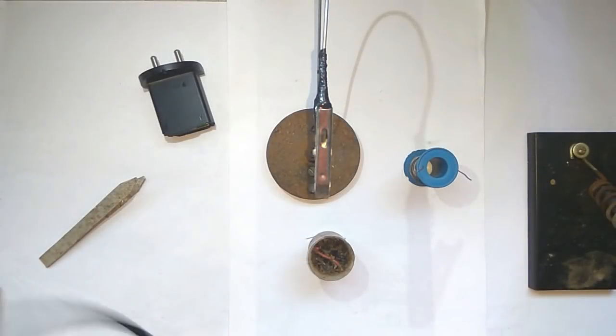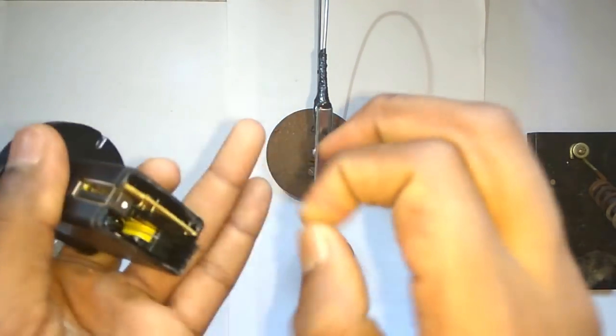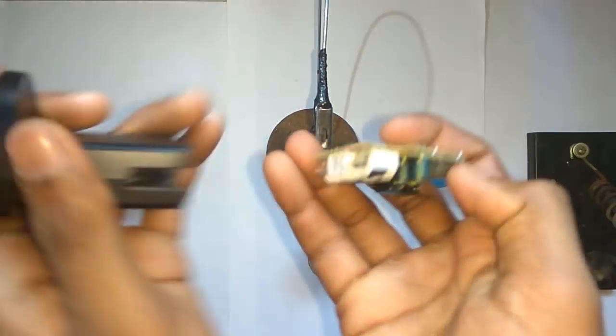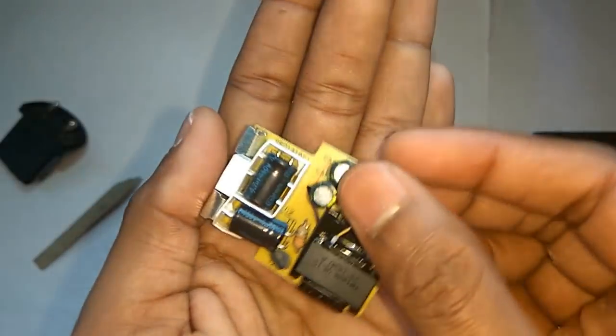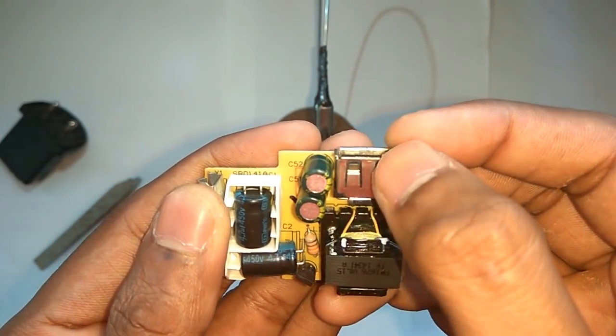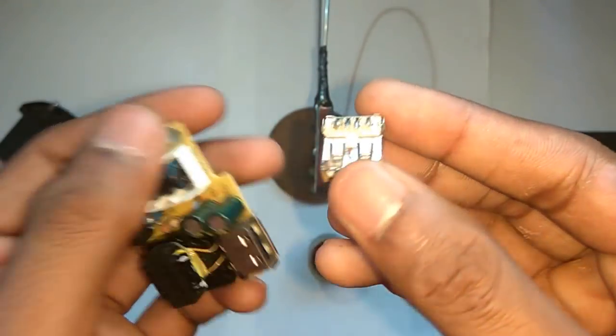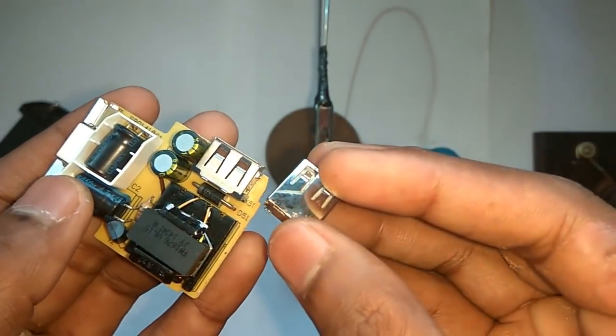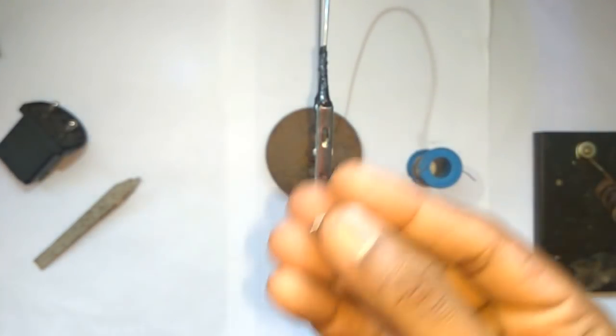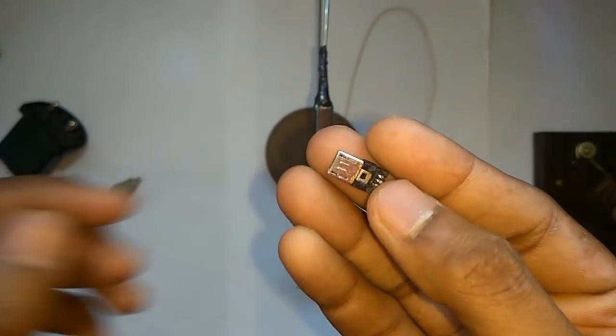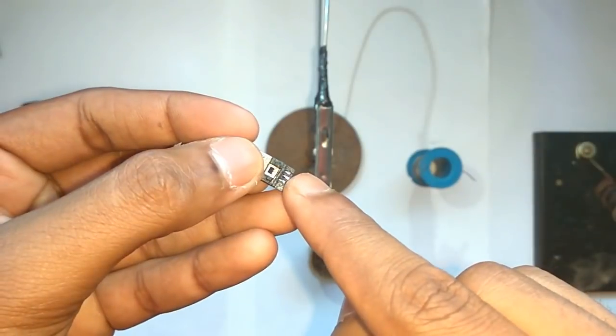So let's remove this charger inside part of the charger, here it is. From this whole thing we will only need this female USB port. Now I have removed it from some other charger. See it is the same thing which has 4 pins. The next thing we need is this mini USB which I removed from the USB cable. It has 2 pins at the bottom and 3 pins at the top.